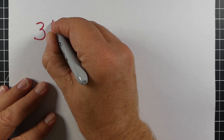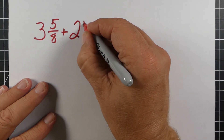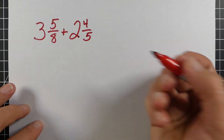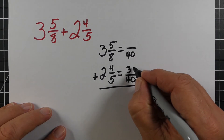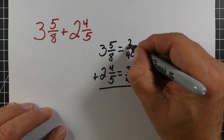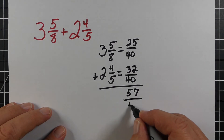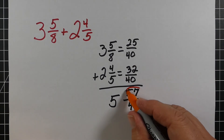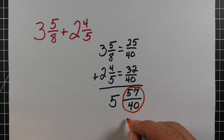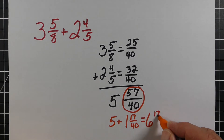Next example: 3 and 5/8 plus 2 and 4/5. Stack them up. We need a common denominator — in this case 40. 5 went into 40 eight times, so I take 4 times 8 to get 32. 8 went into 40 five times, so I take 5 times 5 to get 25. Adding those gives 57/40, and 3 plus 2 equals 5 for the whole numbers. 40 goes into 57 one time, and we take that 40 away from 57 to get 17 left over — that's where we get the 17/40. Adding that to the 5 gives us 6 and 17/40.